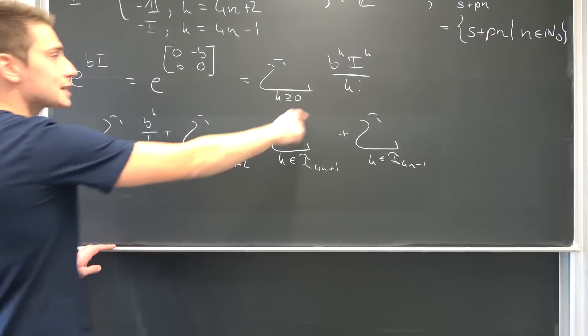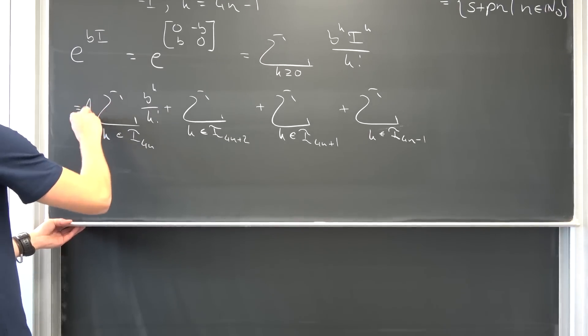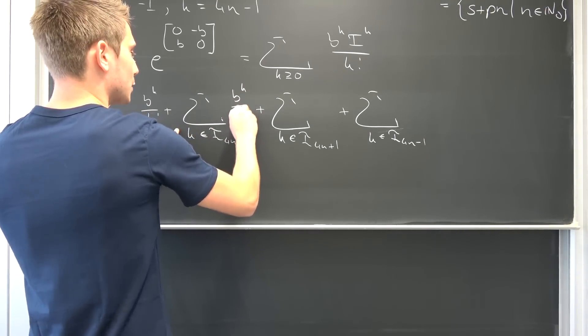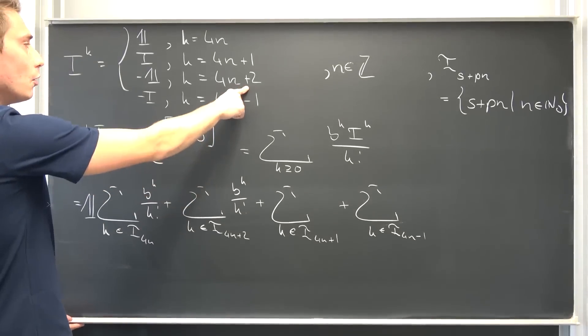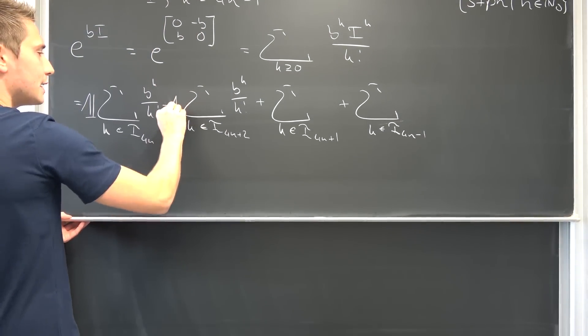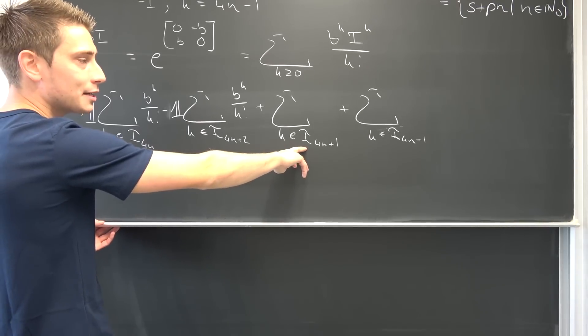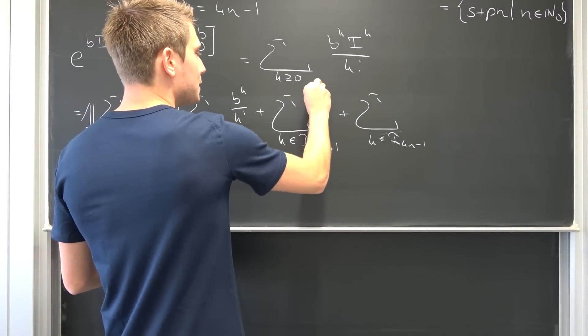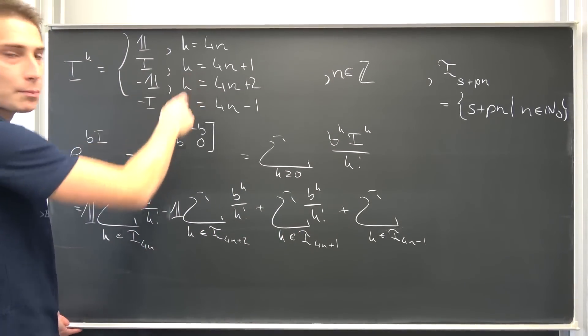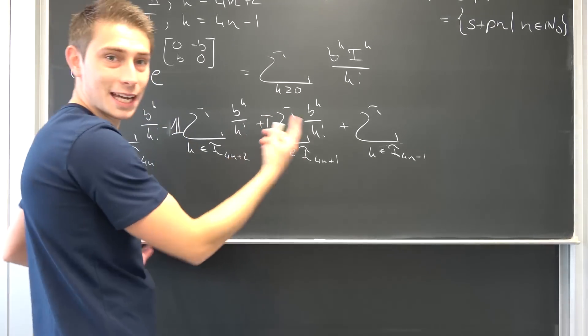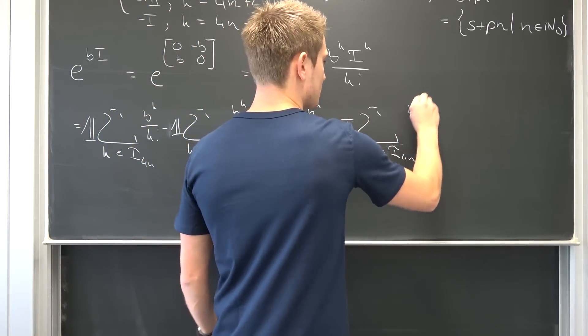We also have I to the 4nth power, which is always the identity matrix. Next, I to the 4n plus 2th power, we are always going to end up with negative the identity matrix. And if we have I to the 4n plus 1 power we are going to end up with simply the imaginary unit all the time. It's not dependent on K anymore. This is a really cool thing. That's why I'm splitting stuff up. And for the last one, we are going to have negative I. I hope you can see the pattern by now.